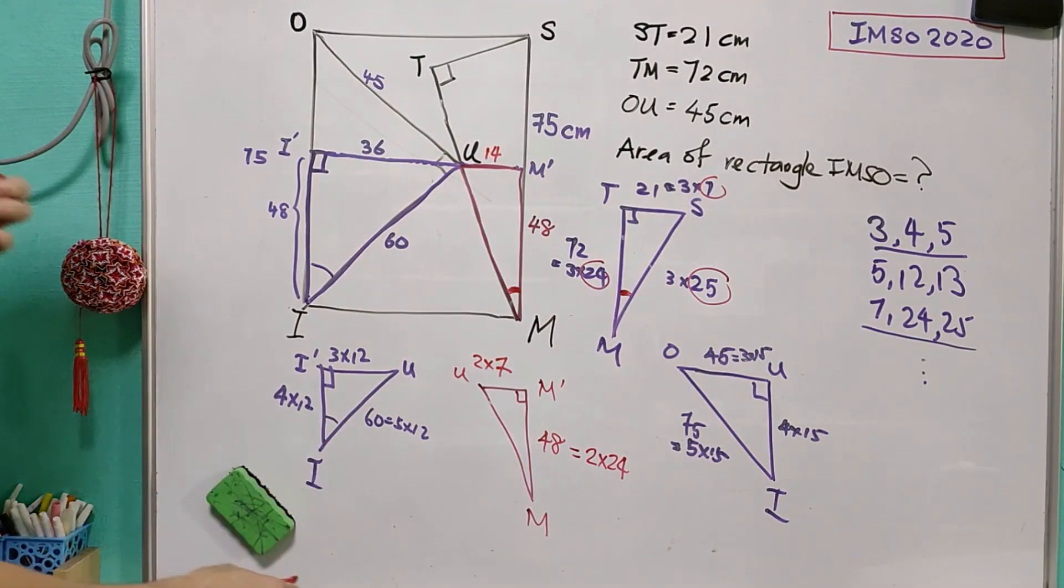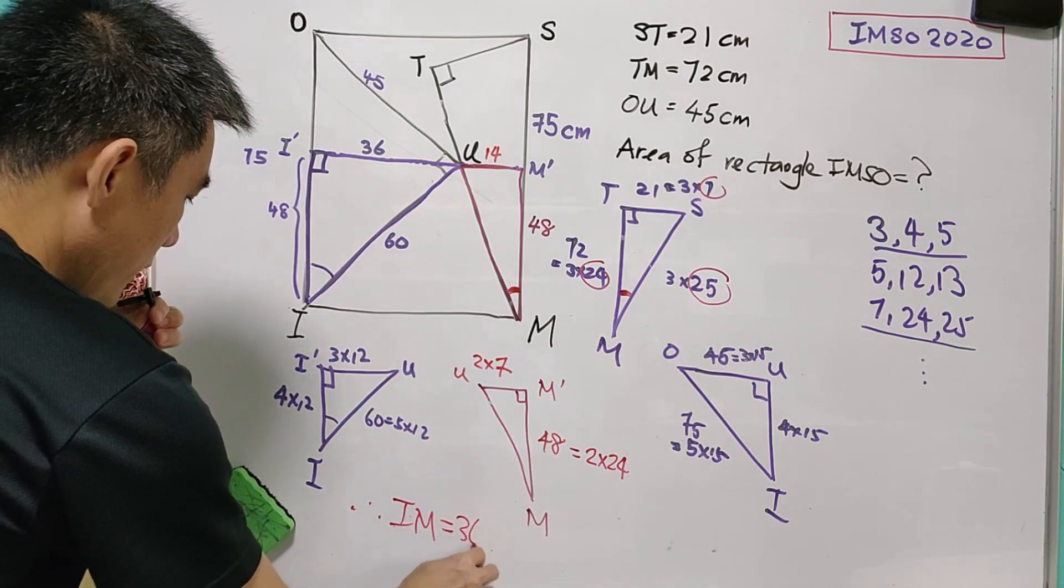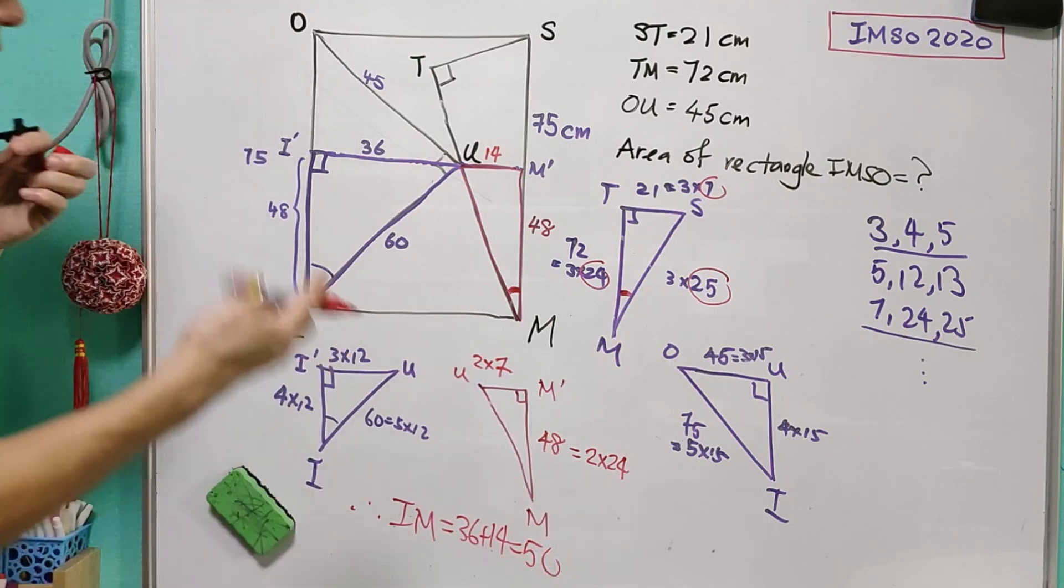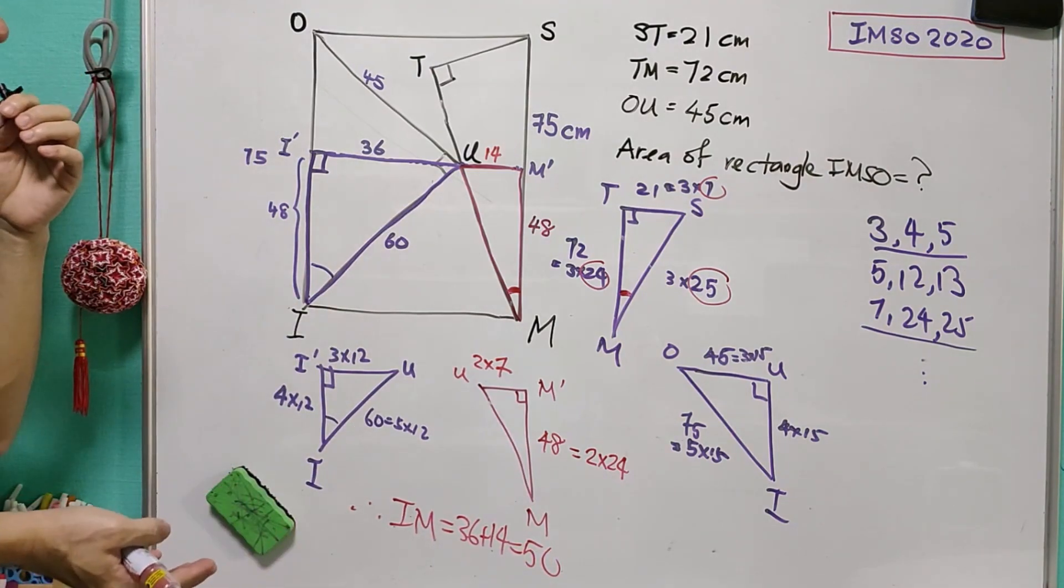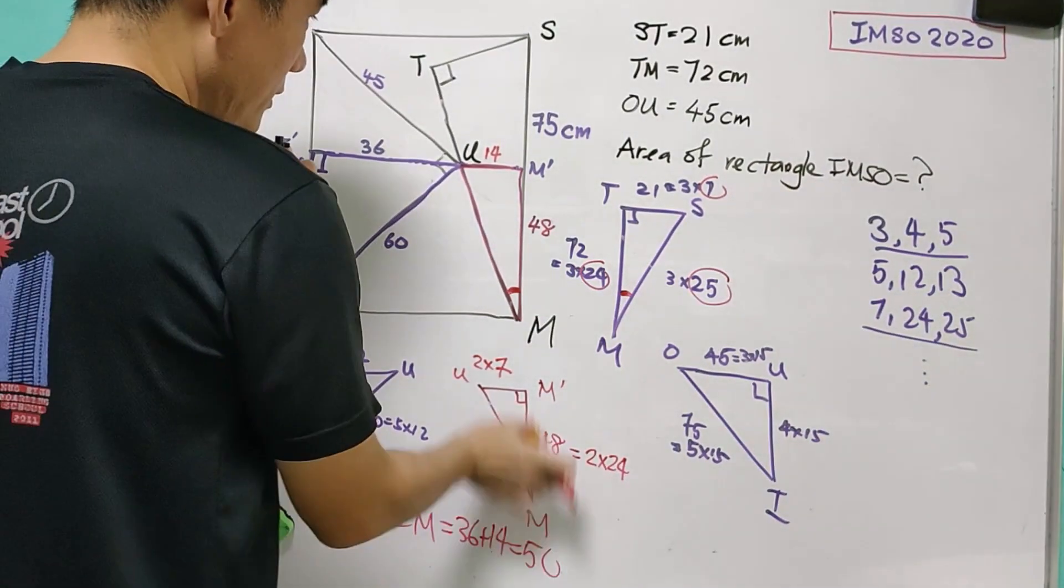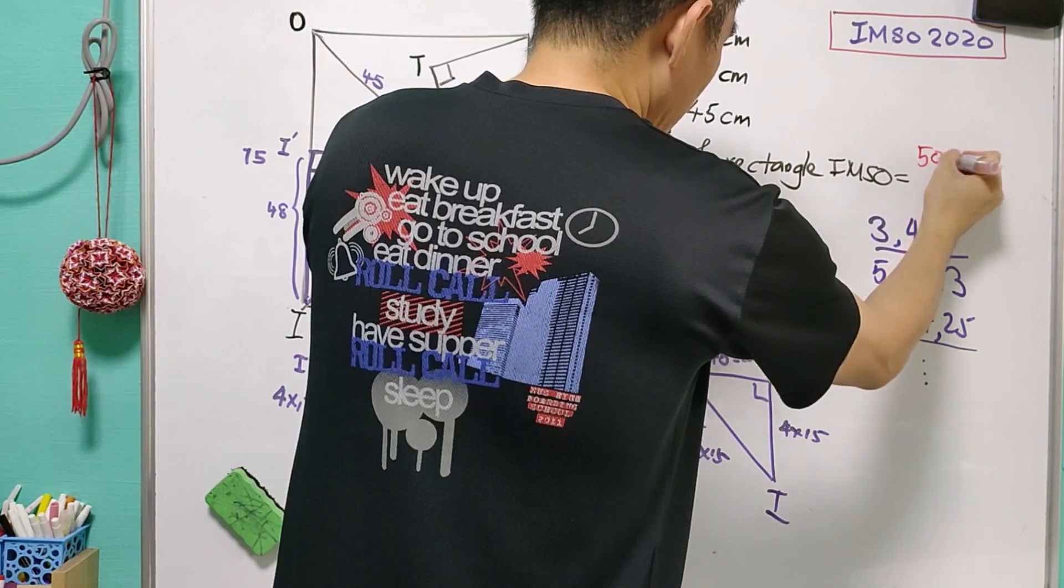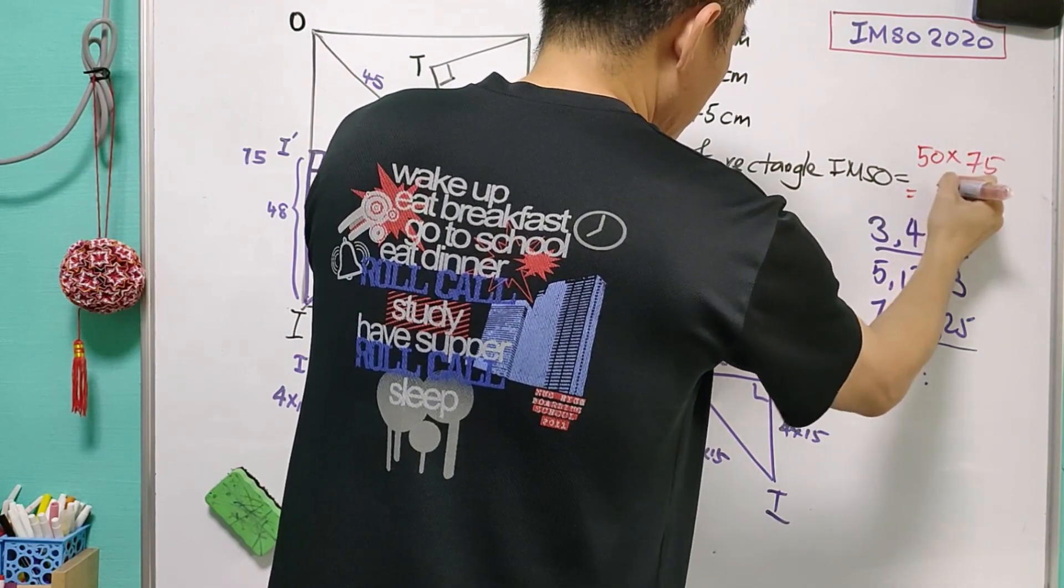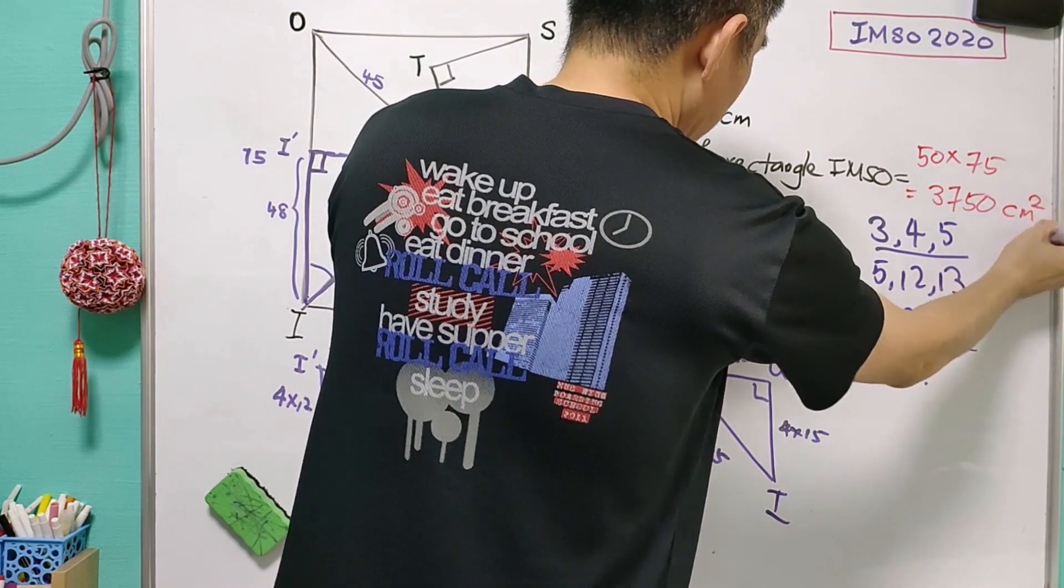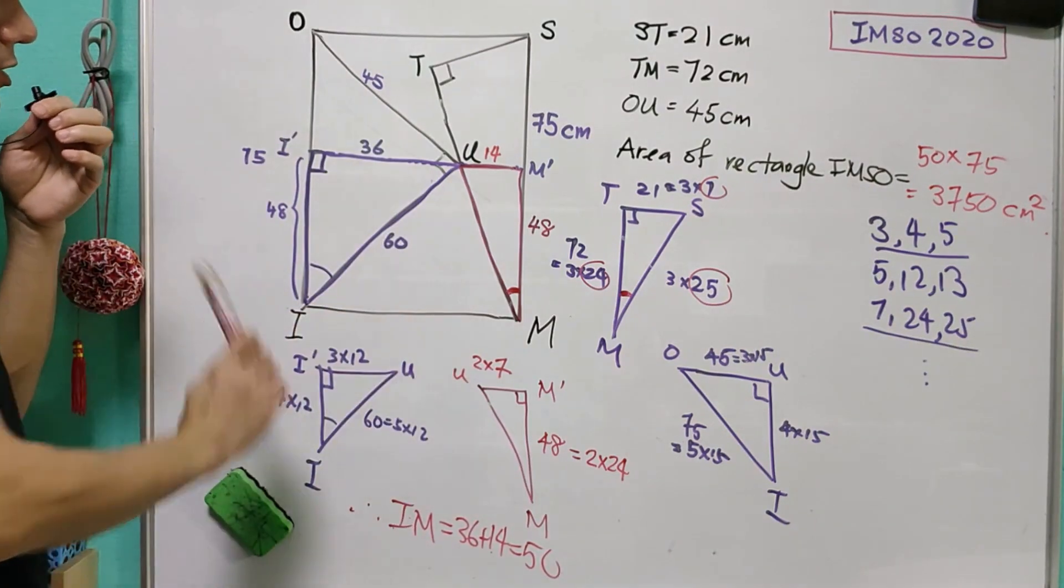With this, we know that IM will be equal to 36 plus 14, that is equal to 50. Now it's time to find the area of rectangle IMSO. It will be equal to 50 times 75, that is equal to 3750 cm squared. So 3750 is the answer for this question.